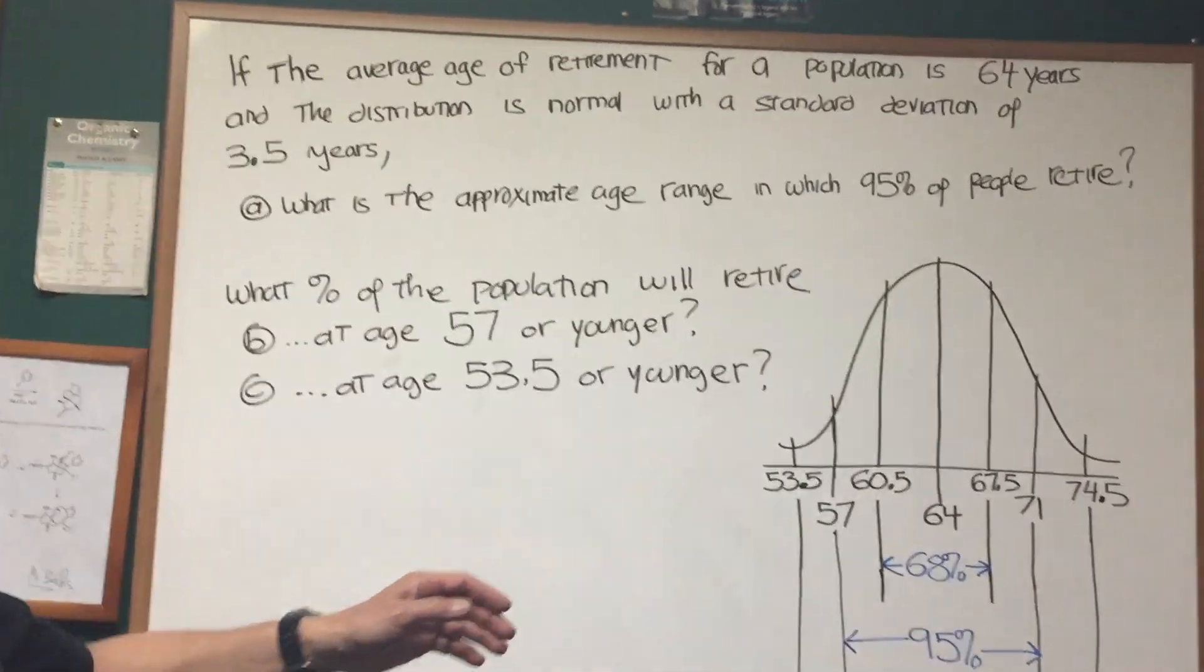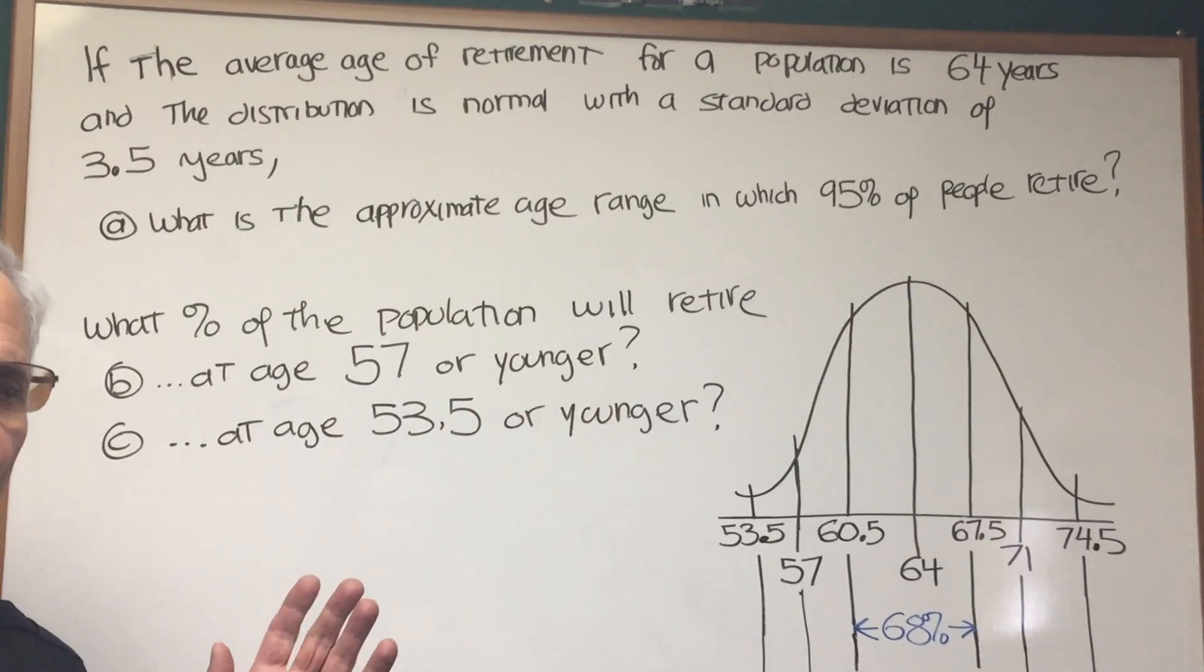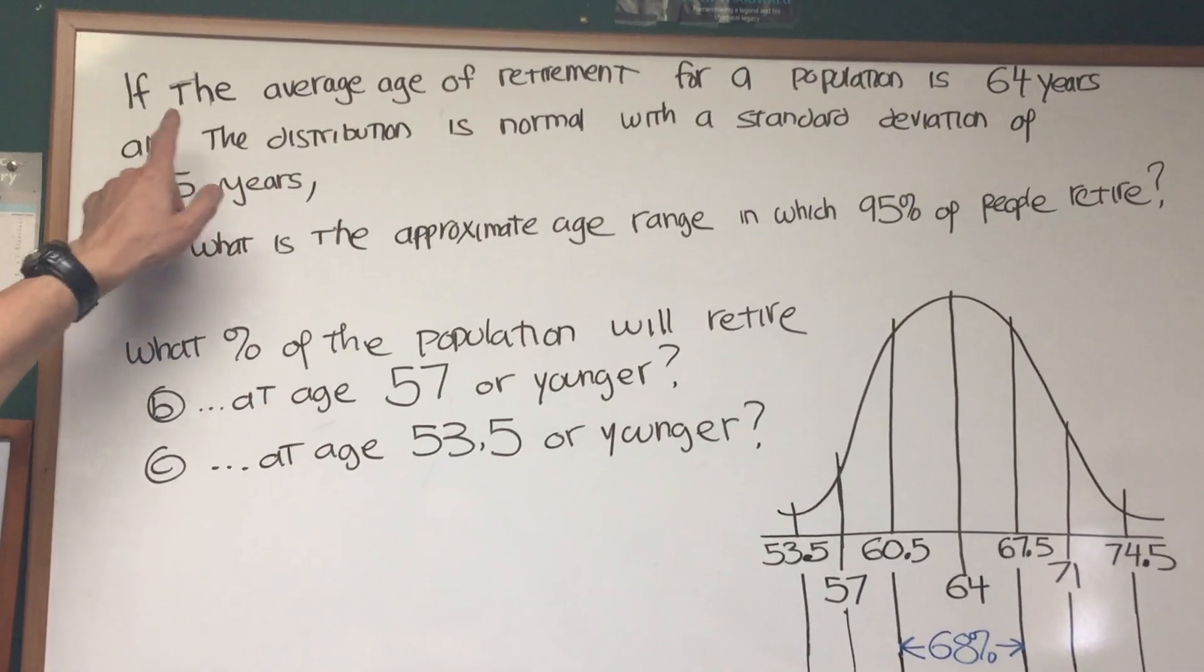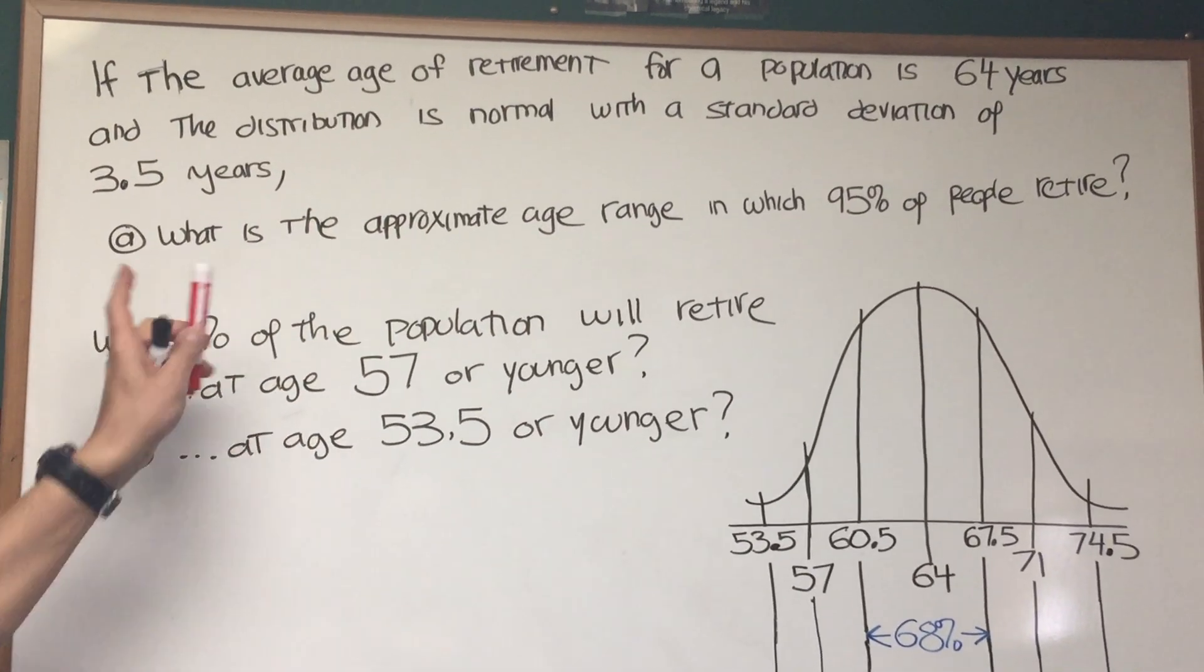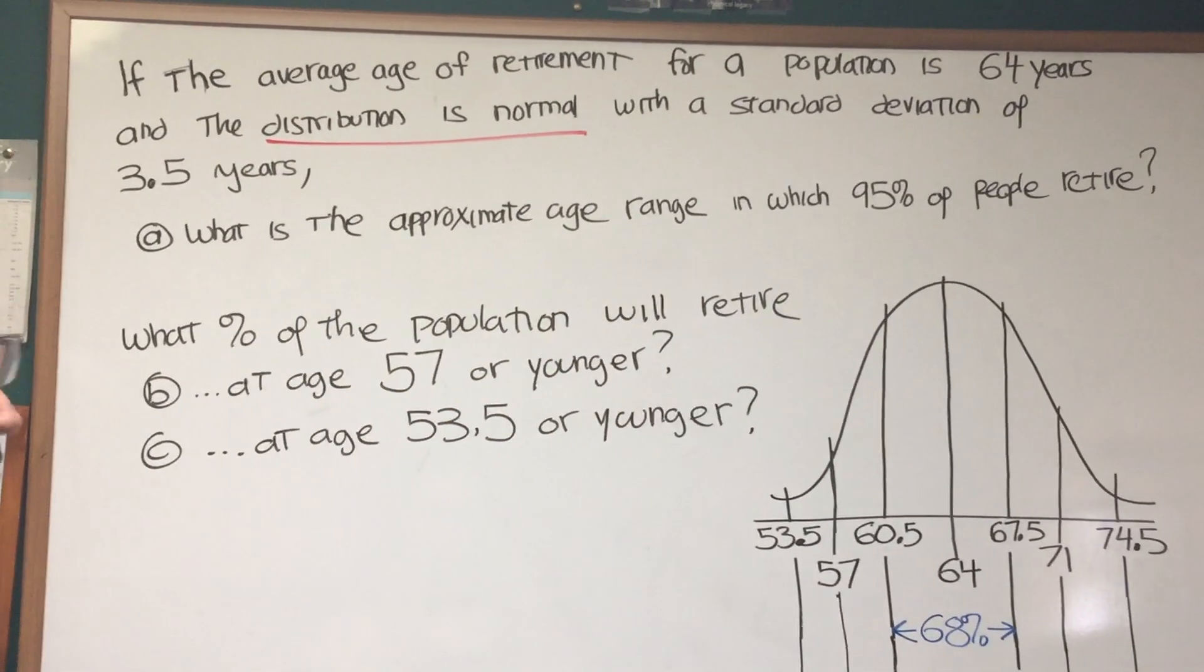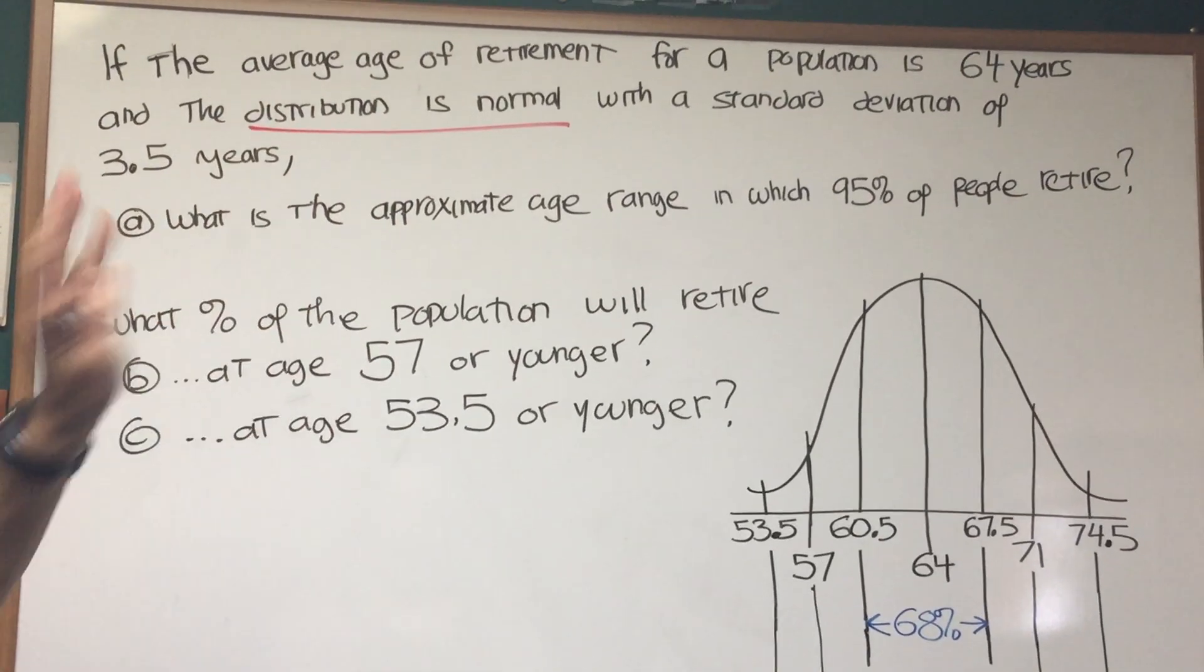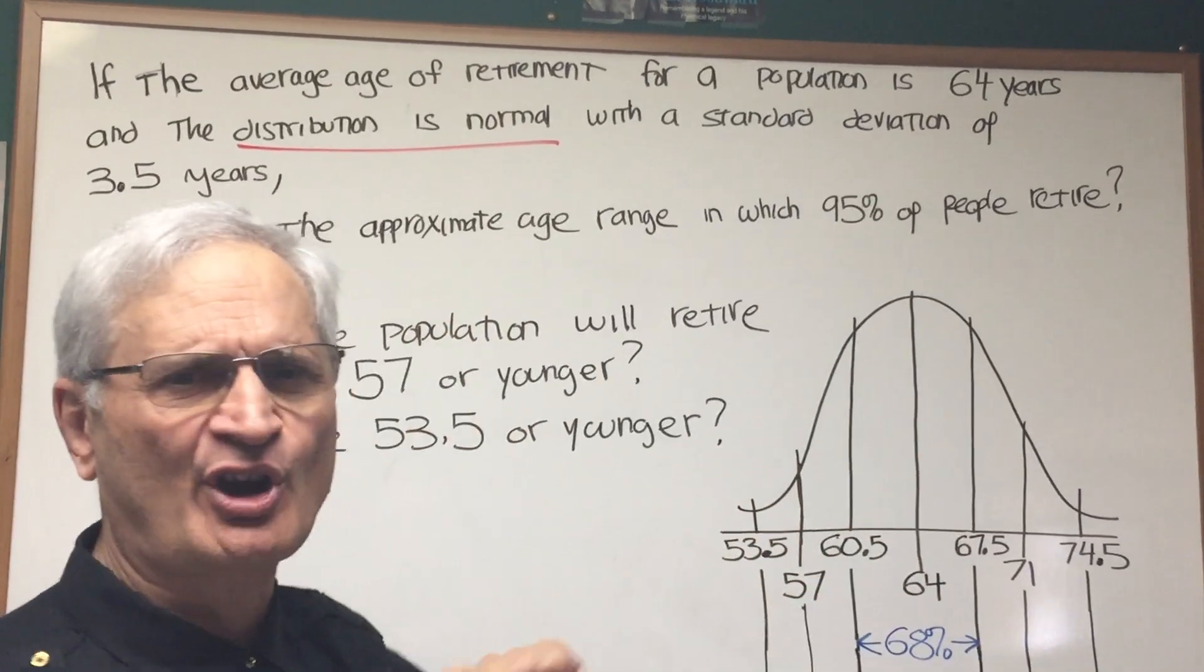This is a problem involving the standard normal distribution and it's going to involve the 68, 95, 99.7% rule, or the empirical rule as it's sometimes referred to. Let's read this. If the average age of retirement for a population is 64 years and the distribution is normal, that is a key word, the distribution is normal. You know it's a normal distribution with a standard deviation of 3.5 years. Before we get to the questions, we already have enough information to draw the standard normal curve and label it.